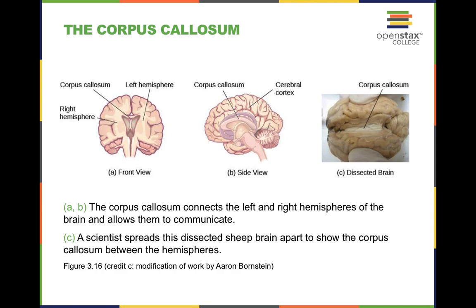There have been studies and medical cases where the corpus callosum has been removed for individuals with Parkinson's disease to alleviate seizures. The difficulty with removing the corpus callosum is that language is largely processed in the left hemisphere. If something is placed in your left visual field, that information goes to your right hemisphere for processing. Without the corpus callosum connecting the two hemispheres, it becomes very difficult — if not impossible — to say what that image is. But if you move it into your right visual field, that goes to the left hemisphere where speech production and comprehension are largely processed.